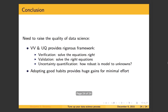In summary, we need to raise the quality of data science — there are a lot of people doing sloppy science. VV&UQ provides a very good framework for thinking about getting the right answer and rigor in your work. There are three main steps: verification — solving the equations right, so write unit tests and make sure you correctly implement your model; validation — make sure you solve the right equations and that your model is faithful to reality; and uncertainty quantification — thinking about how robust your model is to unknowns. I also talked about good habits you can adopt that will provide huge gains in quality for minimal effort.